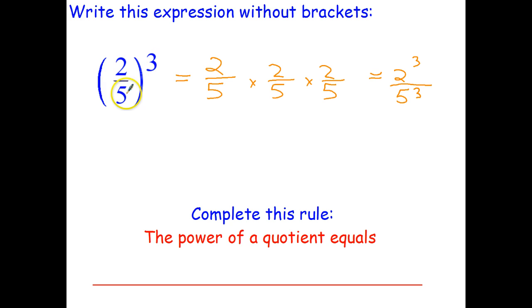So here we had 2 fifths in brackets to the power of 3 and we can rewrite that as 2 to the power of 3 over 5 to the power of 3. Now how do we express that in English? Again it's a little bit tricky. Not too bad though.